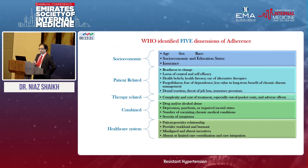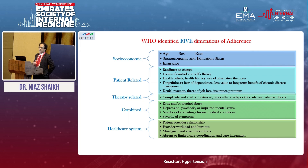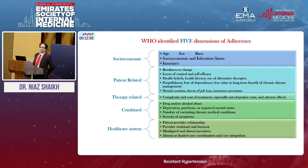The third domain is therapy-related: complexity of the treatment regimen, side effects of medications, and polypharmacy when patients have multiple diseases. The fourth is condition-related — associated comorbidities like diabetes (present in 30-40% of blood pressure patients), depression, and psychiatric problems all contribute to adherence difficulties. The fifth domain is the healthcare system — availability of facilities, insurance coverage, and access to doctors.